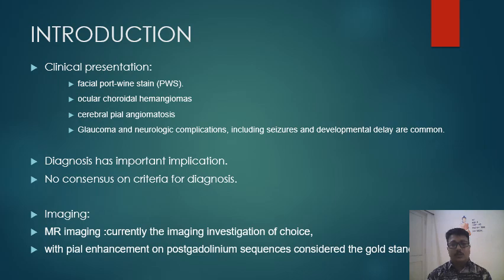Diagnosis has important implications in Sturge-Weber syndrome, as do the radiological findings and diagnosis on imaging. No consensus on diagnostic criteria exists, but the typical facial port wine stain combined with MR imaging showing tram-track calcification and gyral calcification is diagnostic. MR imaging is currently the investigation of choice, and on post-gadolinium sequences, pial enhancement is the gold standard for diagnosis.